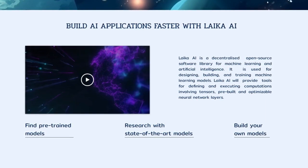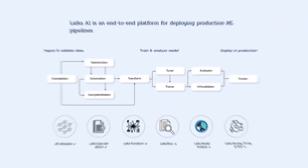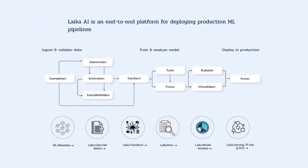Laker AI is an end-to-end platform for deploying production ML pipelines. You can ingest and validate data, train and analyse models, and deploy in production. Here we can see a quick flowchart of the entire process. It starts off as ML Metadata, then Laker Data Validation, Laker Transform, Laker Flow, Laker Model Analysis and Laker Serving, TF Lite and TFJS.